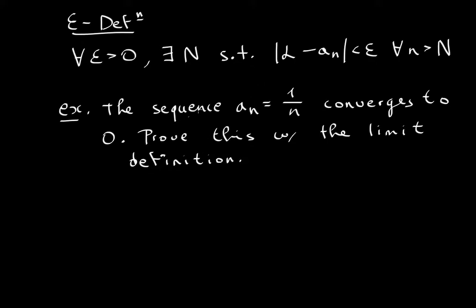For your proof, your whole goal is to find an N. You let them choose their epsilon — you tell them for all epsilons that are greater than zero, I will find you an N. So this is how you do the proof.